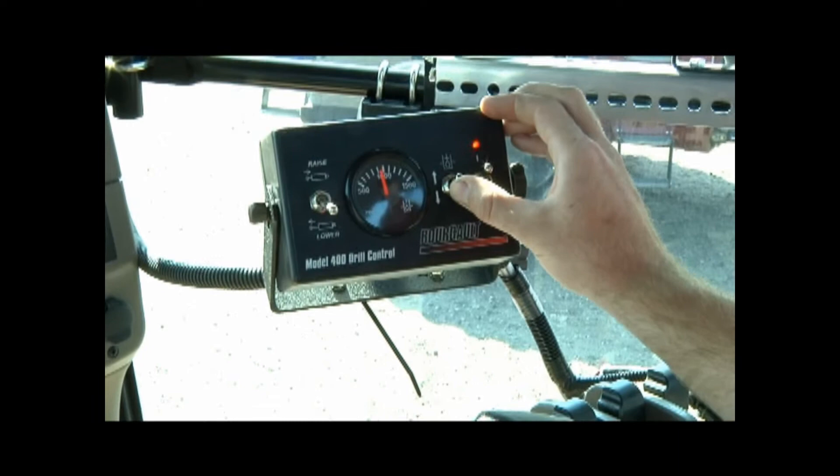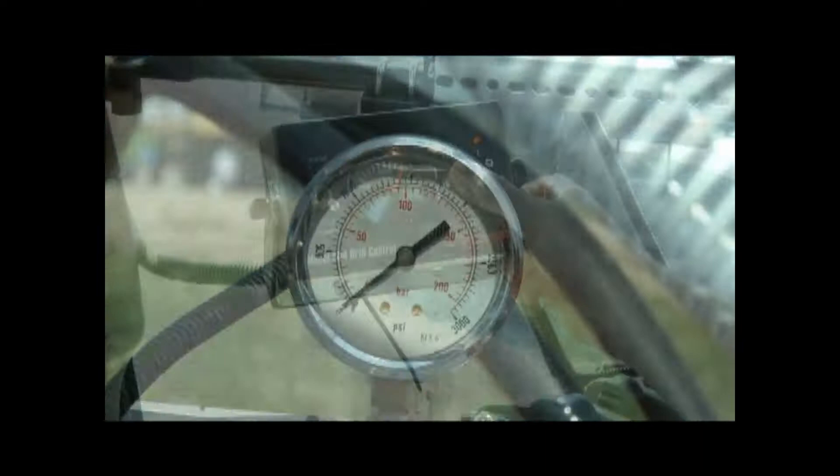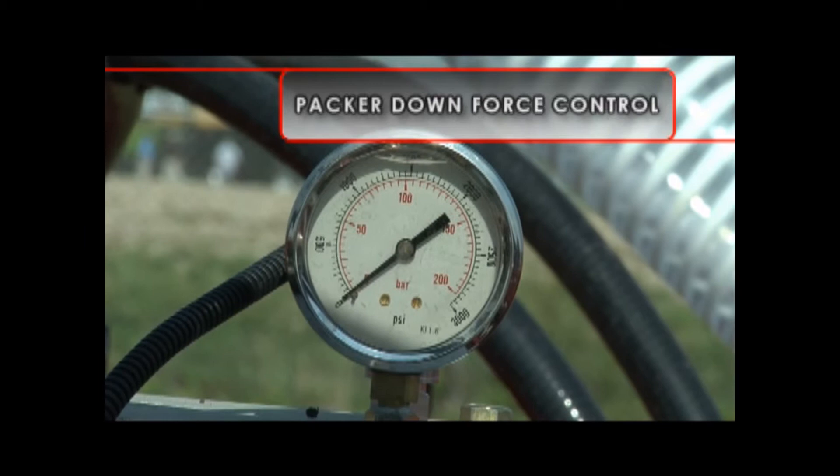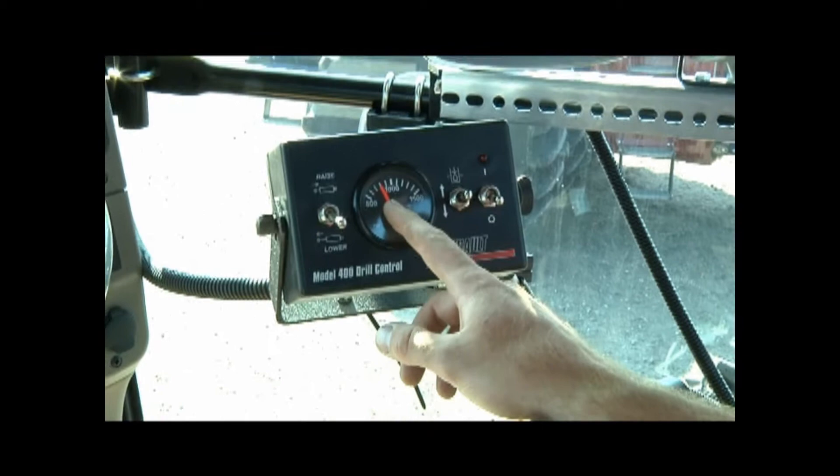The middle toggle controls the hydraulic pressure to increase and decrease opener and packer wheel downforce. The hydraulic pressure is displayed on the Model 400 control box on a gauge at a range from 500 to 1500 PSI. For operation at hydraulic pressure lower than 500 PSI, or to check if the pressure is at zero, refer to the hydraulic pressure gauge located on the block on the front of the mainframe.